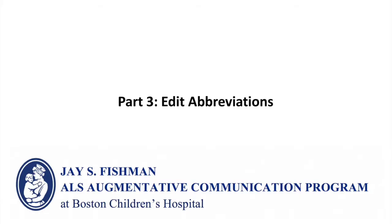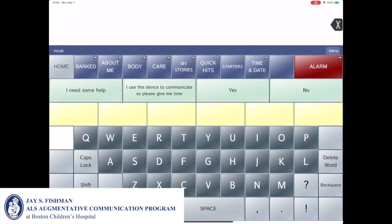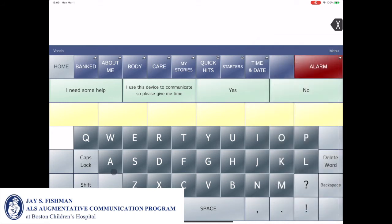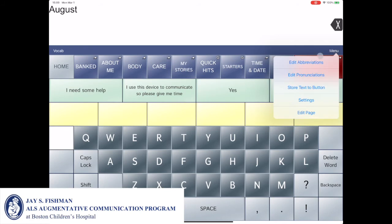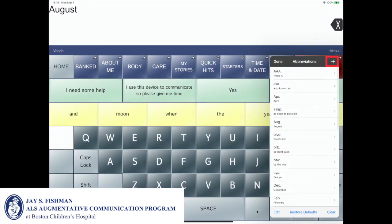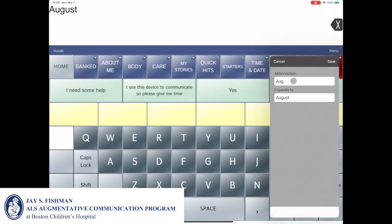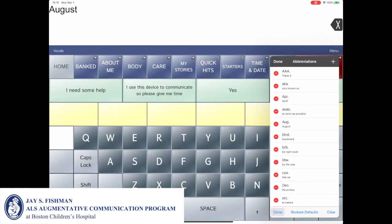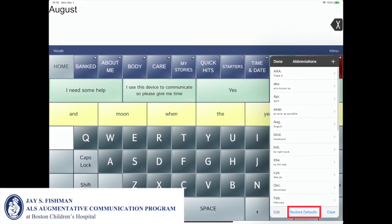The video will now review how to edit abbreviations. Abbreviations can be accessed by selecting menu and then selecting edit abbreviations. For example, the abbreviation 'AUG.' is equivalent to the word August, so if typed in the message window, it will automatically expand to August. In the edit abbreviation menu, you can create a new abbreviation by selecting the plus icon, edit an abbreviation by selecting the arrow to its right, erase single abbreviations using the edit option, restore defaults to erase custom abbreviations, or use the clear option to erase all abbreviations.